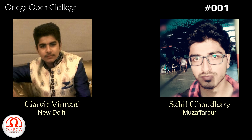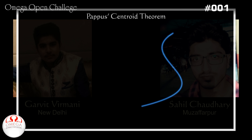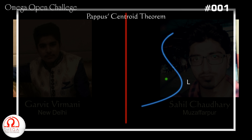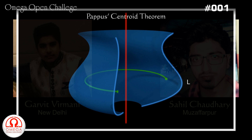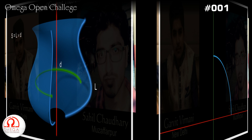Sahil Chaudhary from Muzaffarpur and Garvit Virmani from Delhi have used the Pappus Centroid Theorem to solve the question. Let us first understand the Pappus Centroid Theorem. Let there be any curve in a plane whose length is L, and let there be an axis which lies in the same plane and does not intersect with the curve. If you rotate the curve about the axis, a three-dimensional surface is generated. The Pappus Centroid Theorem says that the area of the surface generated is equal to the product of the arc length and the distance travelled by its centroid. In the case where mass is uniformly distributed along the curve, the center of mass lies on the centroid of the curve. Using this result and the Pappus Centroid Theorem, we can solve this question.